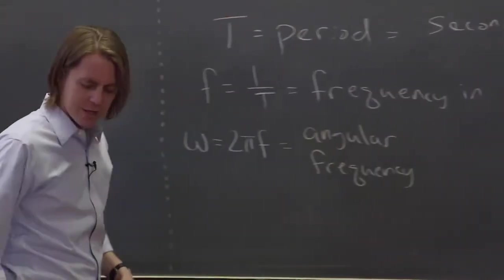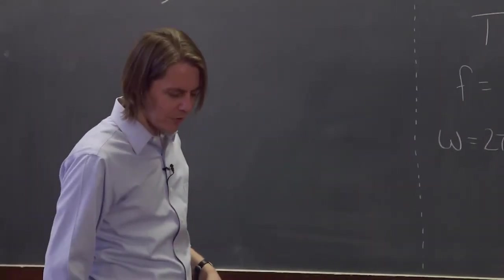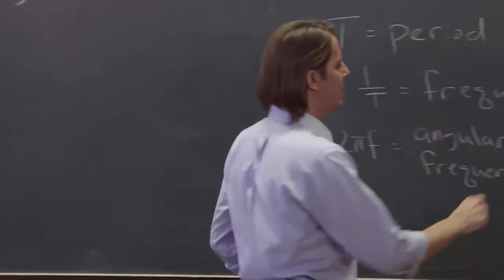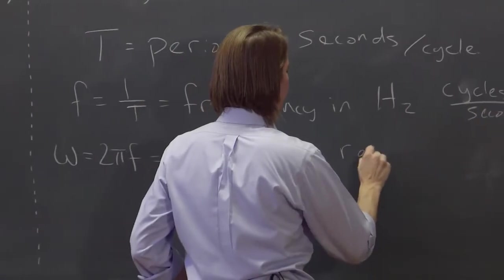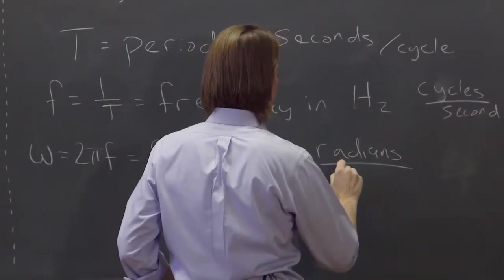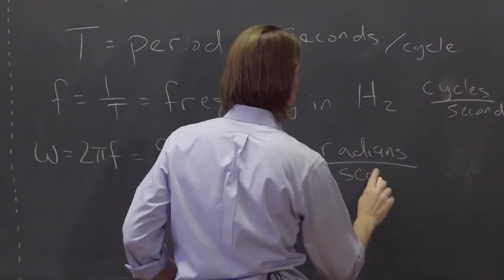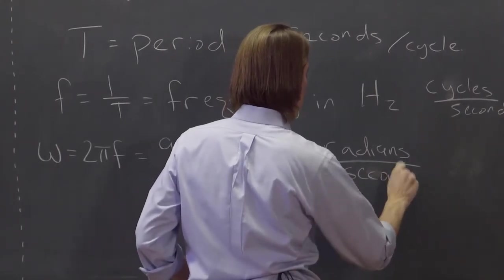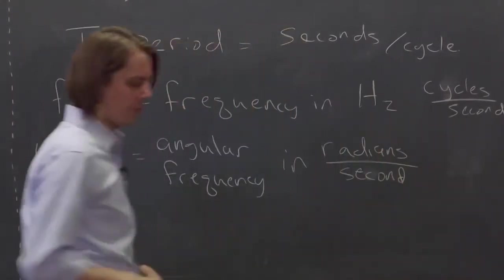If you haven't accepted that yet, I'm not sure how you made it this far in this class. It's the angular frequency, and it is in radians per second, where a cycle is just 2π radians, radians per second.